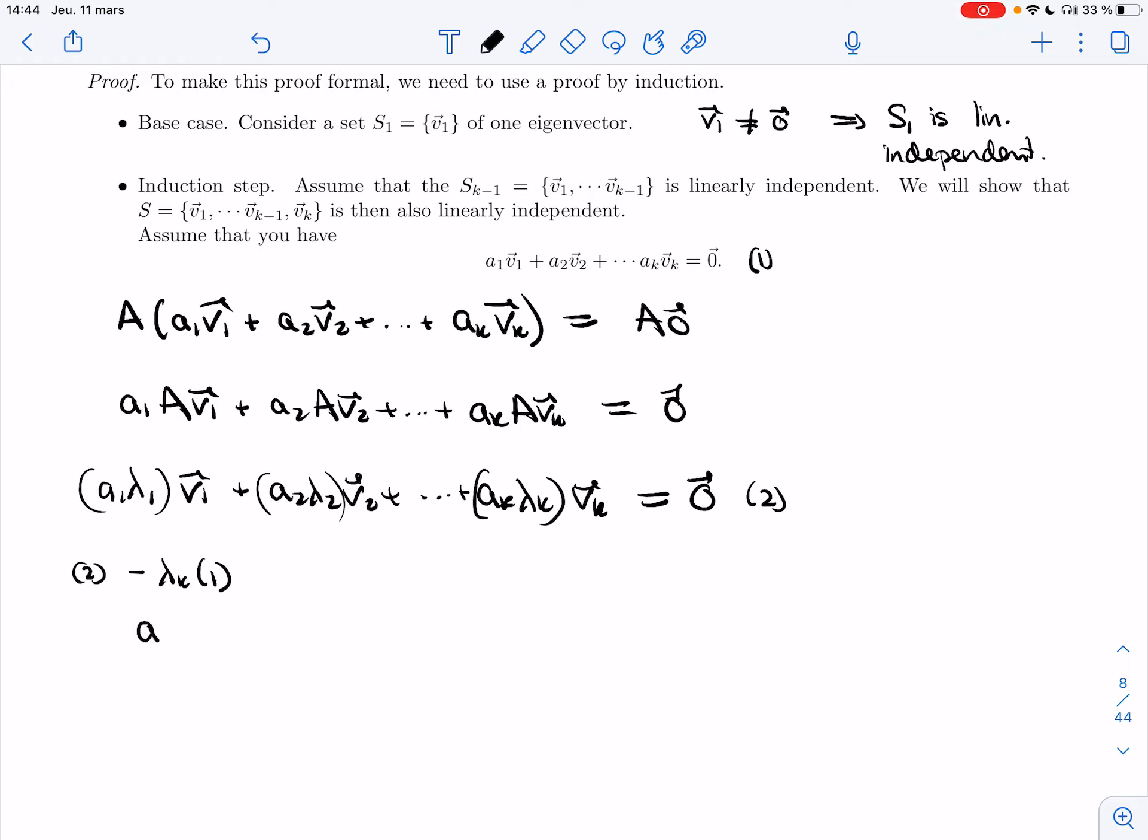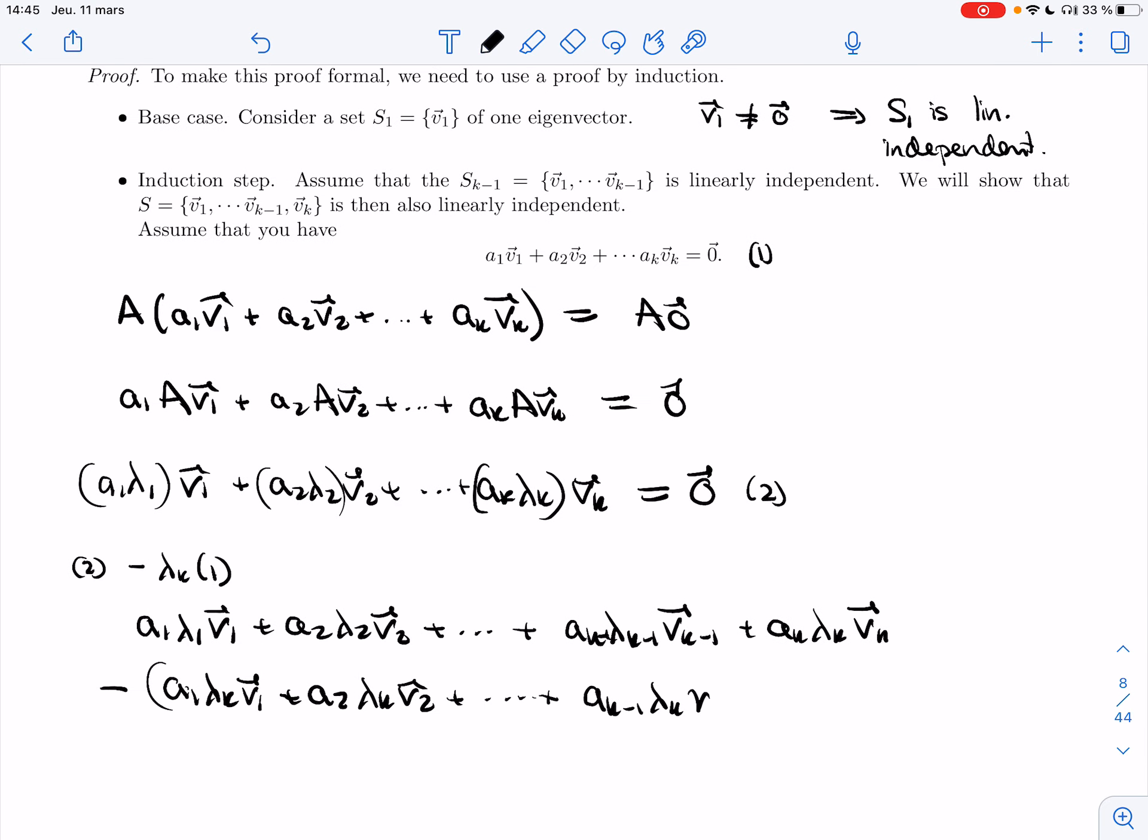Then I'm going to get a_1 lambda_1 v_1, plus a_2 lambda_2 v_2, plus a_{k-1} lambda_{k-1} v_{k-1}. And then I'm going to subtract a_1 lambda_k v_1, a_2 lambda_k v_2, a_{k-1} lambda_k v_{k-1}, and a_k lambda_k v_k. Alright, so these two will actually cancel completely.